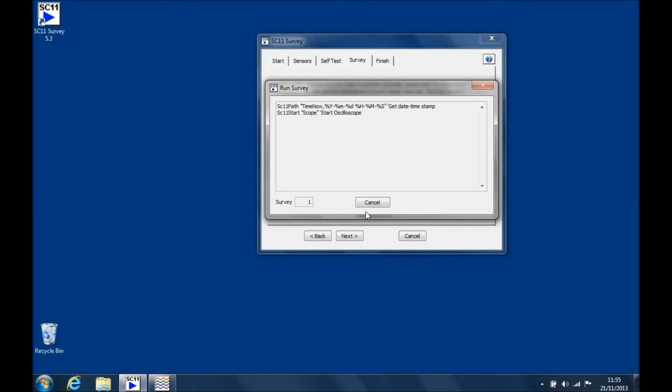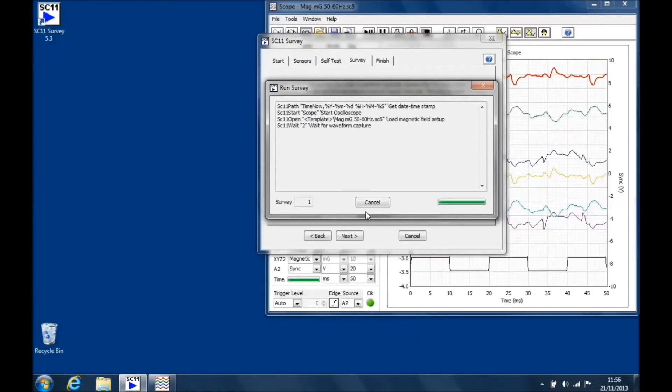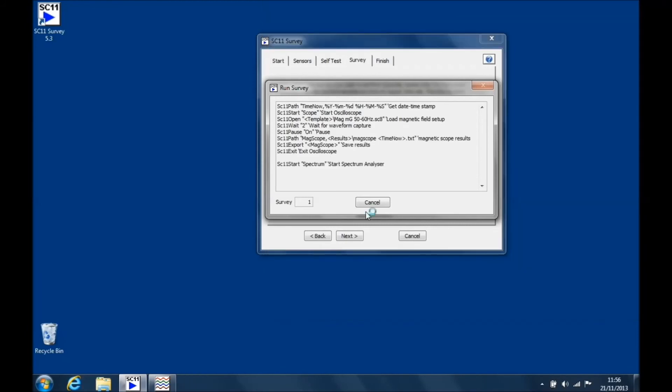The macro for this survey will then start to run. It calls up the other programs which are part of the SC11 analysis system package to take measurements and make a report from all the data acquired. Here is another speeded up sequence of the survey running.